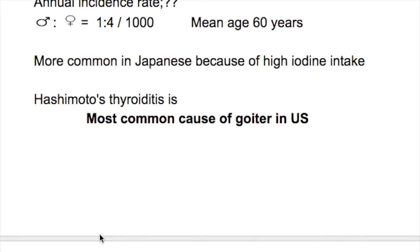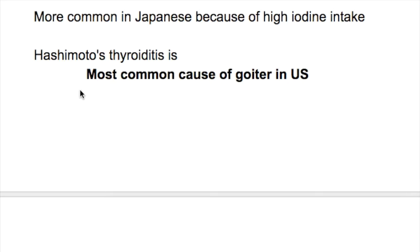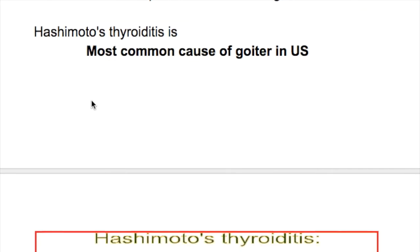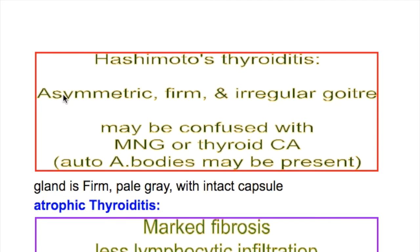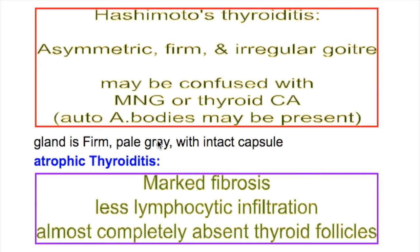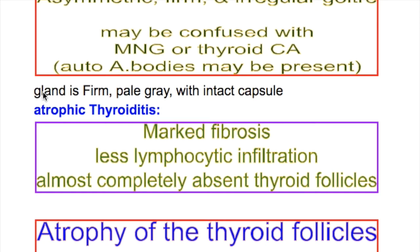What are the features of Hashimoto's thyroiditis? Hashimoto's thyroiditis is the most common cause of goiter in the United States, whereas worldwide it is due to iodine deficiency. In Hashimoto's thyroiditis the gland is asymmetric, firm, and irregular, and may be confused with multinodular goiter or thyroid carcinoma, which may also have autoantibodies.